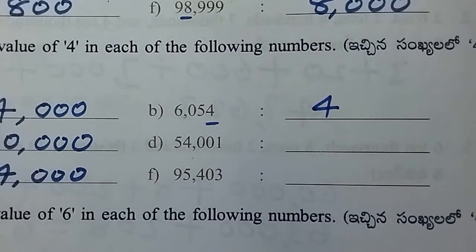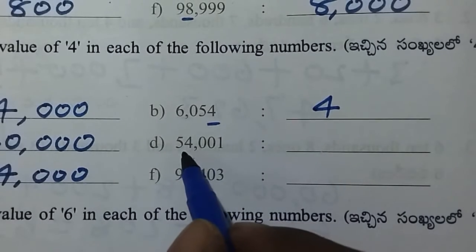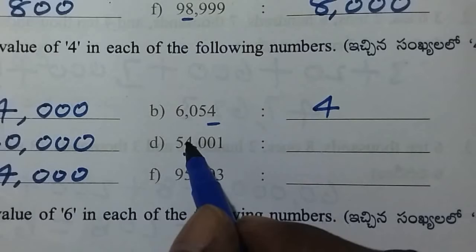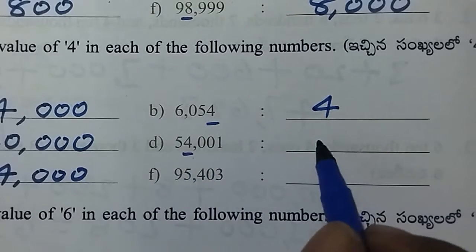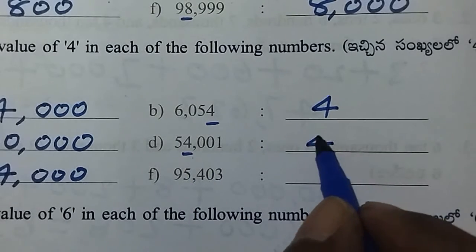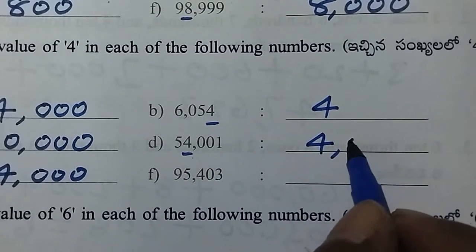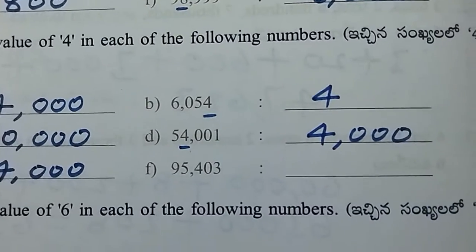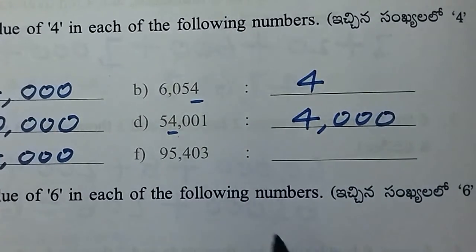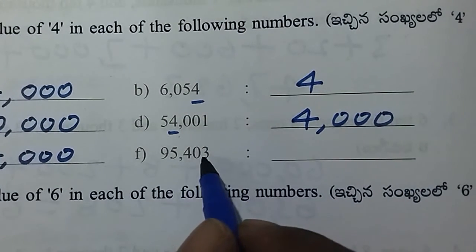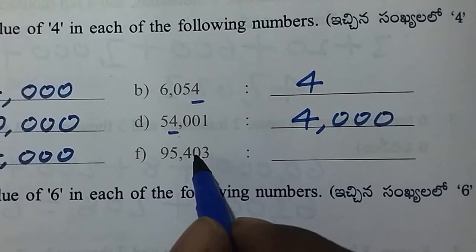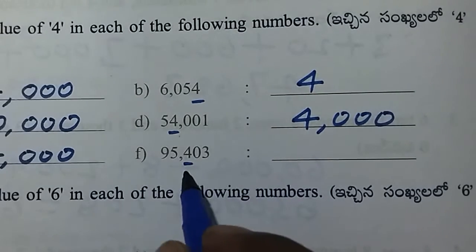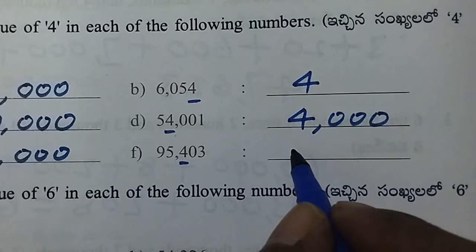Next: 4 is equal to the 1s, 10s, 100s, 1000s positions. Next: 4 is equal to the 1s, 10s, 100s, 1000s positions.